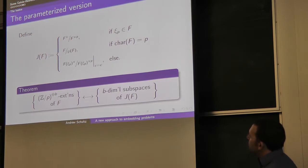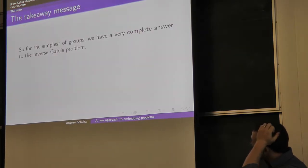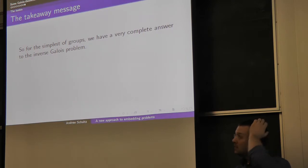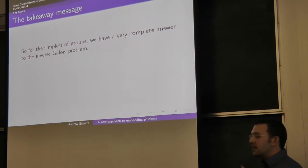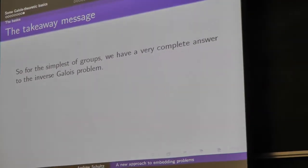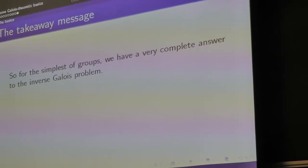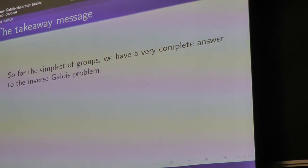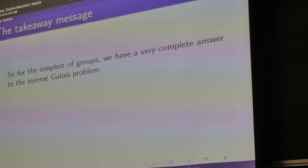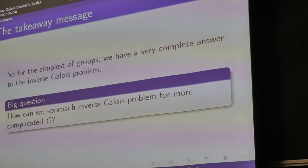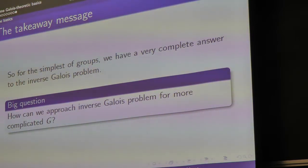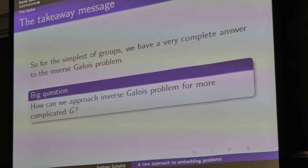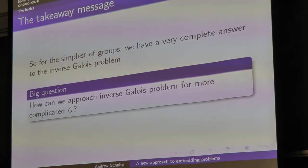The takeaway is that when you look at the simplest possible groups, we have a really nice answer to the inverse Galois problem. We have generic polynomials and everything, so we really understand constructing these kinds of Galois groups. The next question to ask is: now that we understand the inverse Galois problem for these very simple groups, how do you actually answer the question for more complicated groups?